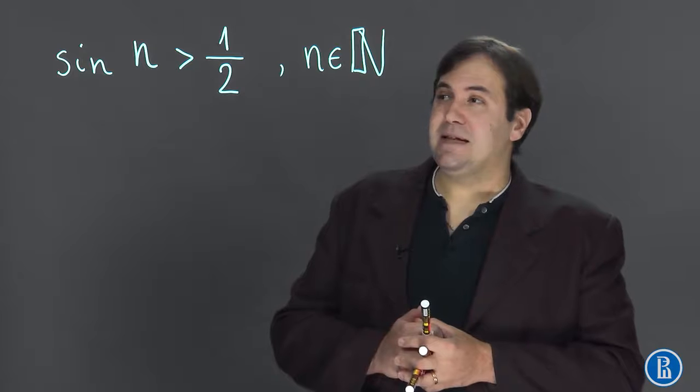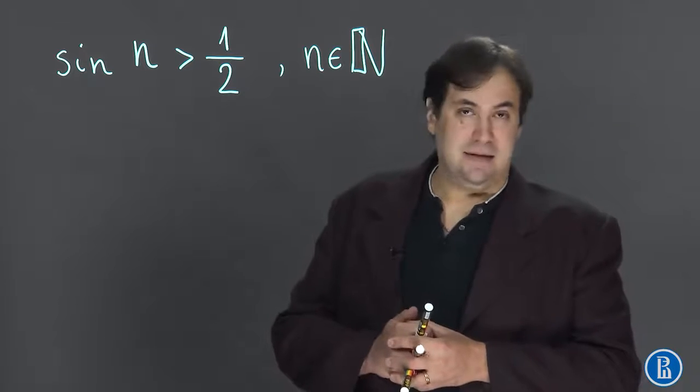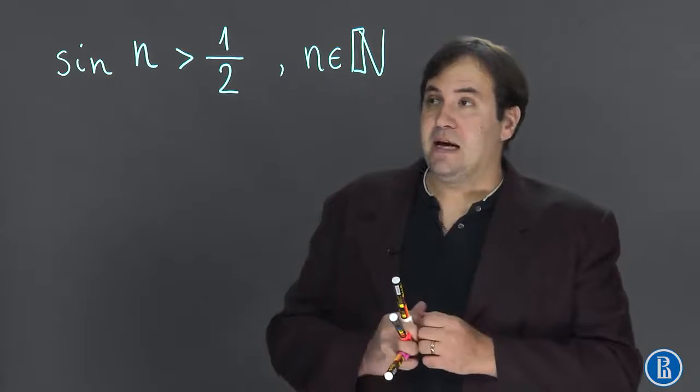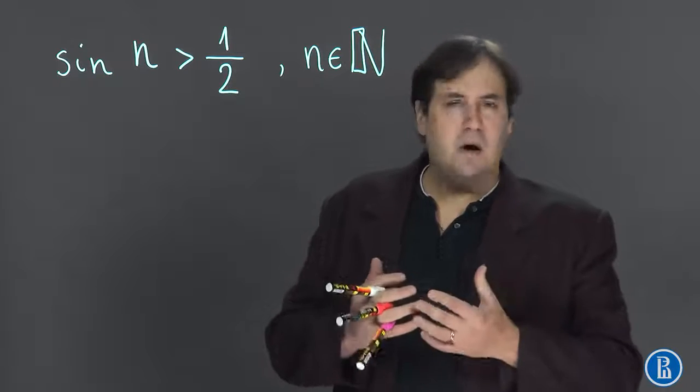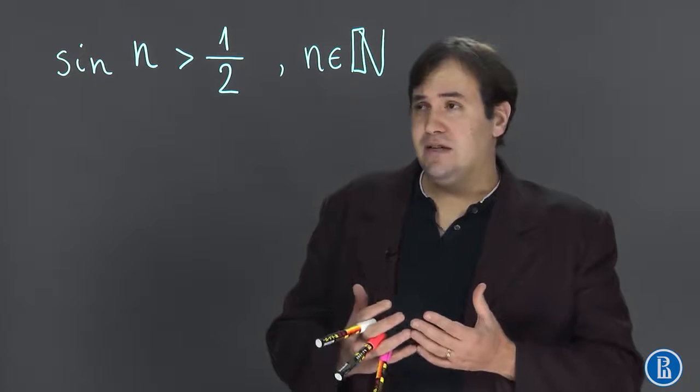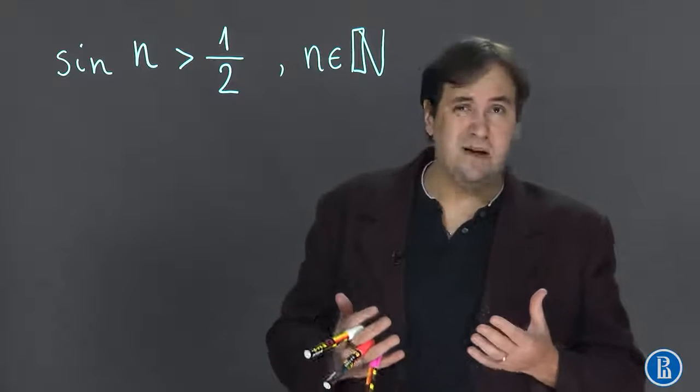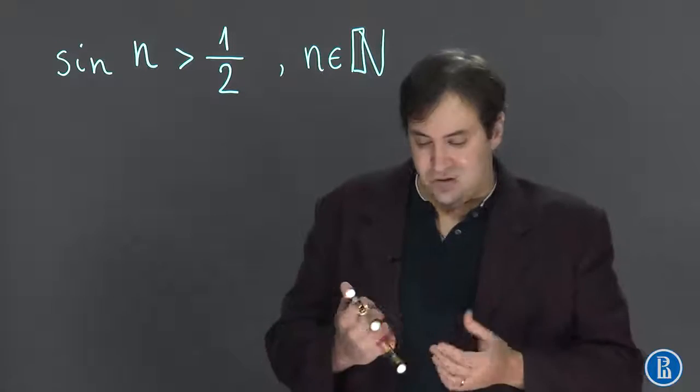We understand from Kronecker's theorem that there are infinitely many such n that satisfy this equation. However, we would like to know how often is the sine of a natural number greater than one half. First we need to define what it means 'how often' n, and then solve this task.